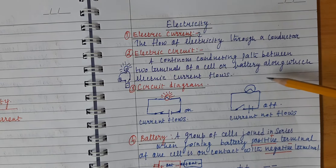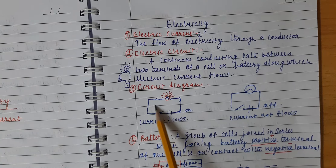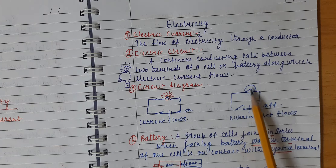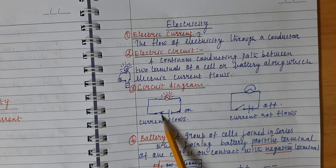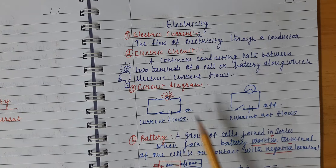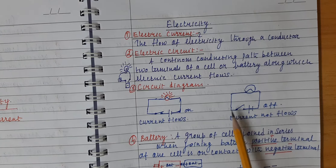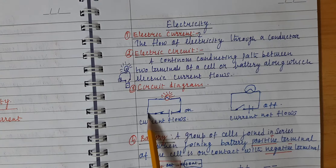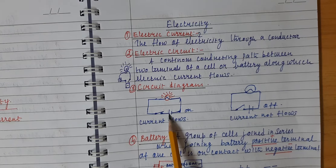Next: what is electric circuit? There is a closed electric circuit and an open electric circuit. In a closed circuit, the current flows; in an open circuit, the switch is open and the current is not flowing — the circuit is on or off. An electric circuit is the continuous conducting path between two terminals of a cell.